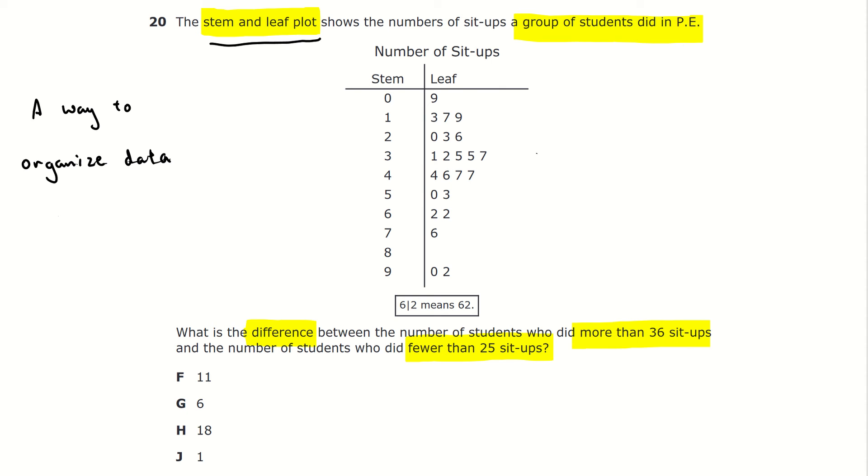One way to think of a stem and leaf plot is, as the name suggests, in a stem and leaf fashion, or kind of like a plant. So we can imagine a stem of a leaf. Let's take the number one, so the stem represents the number one, and on top of the stem there are three leaves. As you can see here, the three leaves are three, seven, and nine.